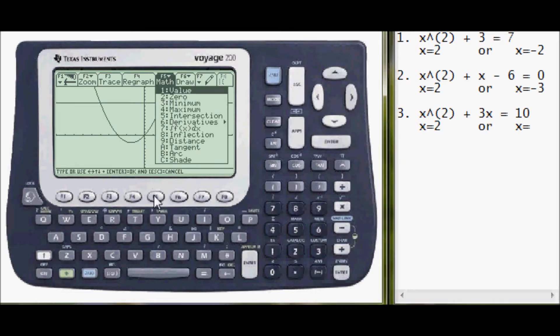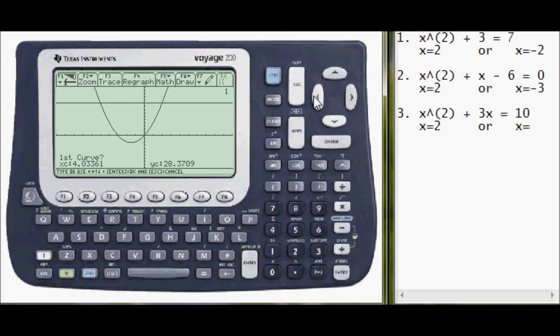Okay. And now f5 again. The intersection is number 5. First curve, let me scroll back down. First curve. Enter. Second curve. Lower bound, I'll estimate to be 1, 2, 3, 4, 5, 6, 7, negative 7, to be on the safe side. And then maybe negative 3 to be on the right of that. And the intersection is negative 5. And those are the answers.